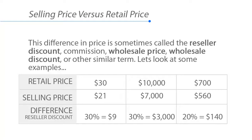Let's look at some examples. If the retail price is $30, but the selling price to the reseller or distributor is $21, the difference is $9. 30 minus 21 equals 9. That's a 30% difference, so the discount we are providing to the reseller or distributor is 30%.